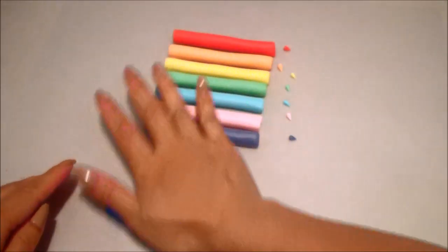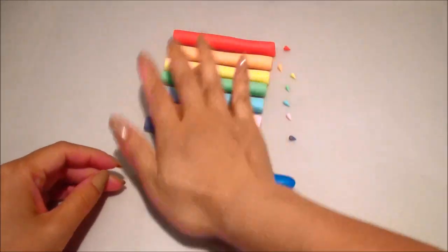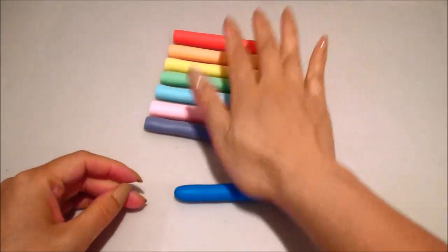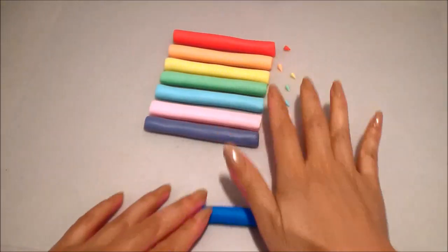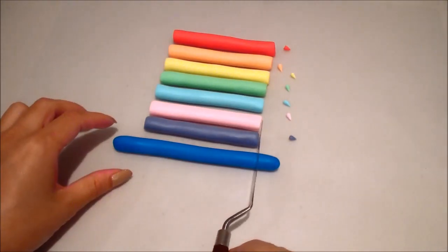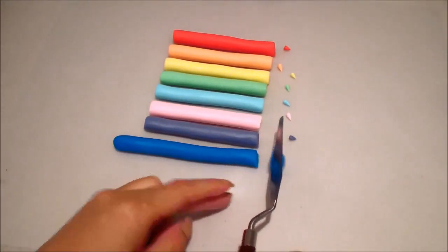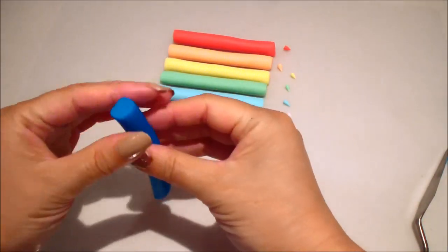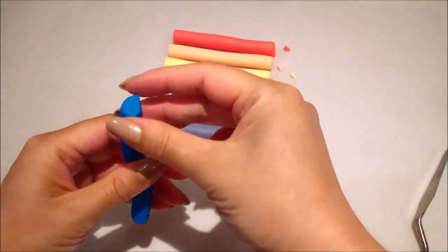I'm going to be using different colored fondant icing. I'm rolling out some blue fondant icing with my hands, trying to keep it the same thickness all the way through, and then I'm using my palette knife just to cut the ends off. Rounding the ends.